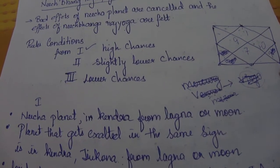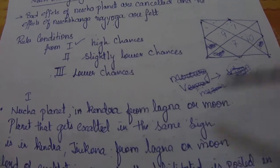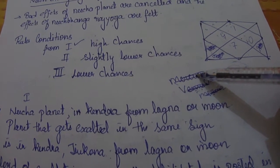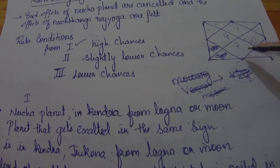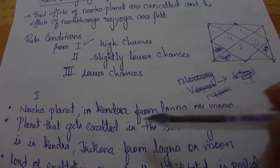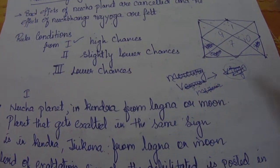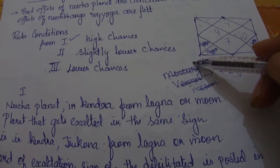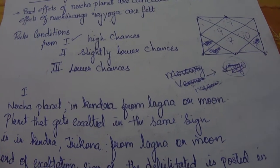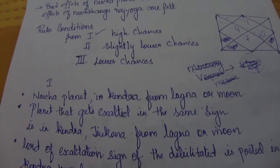Another condition: the planet that rules the sign in which the Neecha planet is placed should be in Kendra or Trikona from Lagna or Moon. For example, Venus is debilitated in Virgo and the ruler of Virgo is Mercury. So if Mercury is placed in a Kendra — say house number 7 — while Venus is debilitated in Virgo, the debility of Venus gets cancelled.